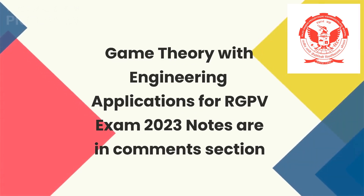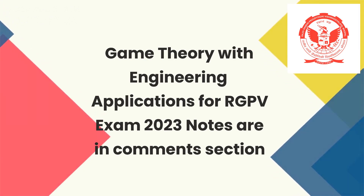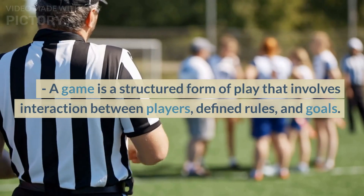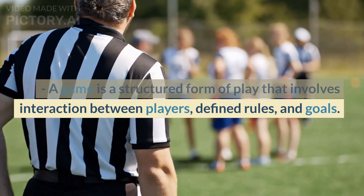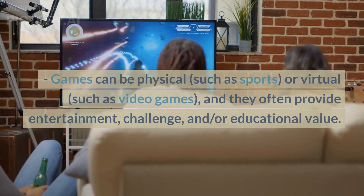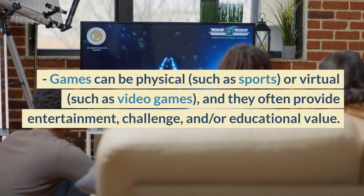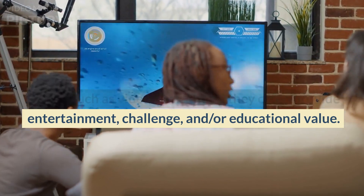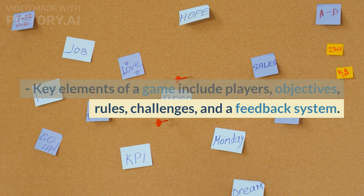Game theory with engineering applications for RGPV exam 2023 — notes are in the comments section. A game is a structured form of play that involves interaction between players, defined rules, and goals. Games can be physical, such as sports, or virtual, such as video games, and they often provide entertainment, challenge, and educational value. Key elements of a game include players, objectives, rules, challenges, and a feedback system.